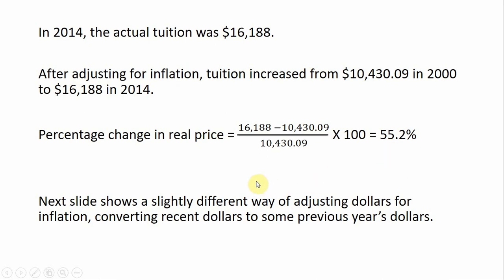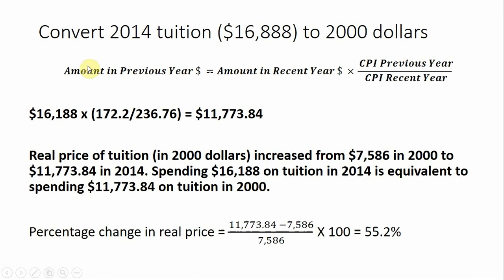The next couple of slides are going to show slightly different ways of adjusting dollar values for inflation. We're going to look at converting recent dollars to some previous year's dollars — sort of the opposite of what we just did. For example, instead we could have converted 2014 tuition to 2000 dollars and made the comparison.